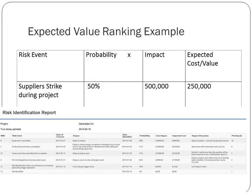Another technique for prioritizing risk is looking at the expected value — discussing the risk impact only in terms of monetary effect. As we see on the screen, for example, a supplier strike has a 50-50 probability. The impact, if that supplier strike occurs, is $500,000, so the expected value is half of that: $250,000. We multiply probability by impact. Some companies have adopted this method, and the digital tool allows you to record either type of risk impact.